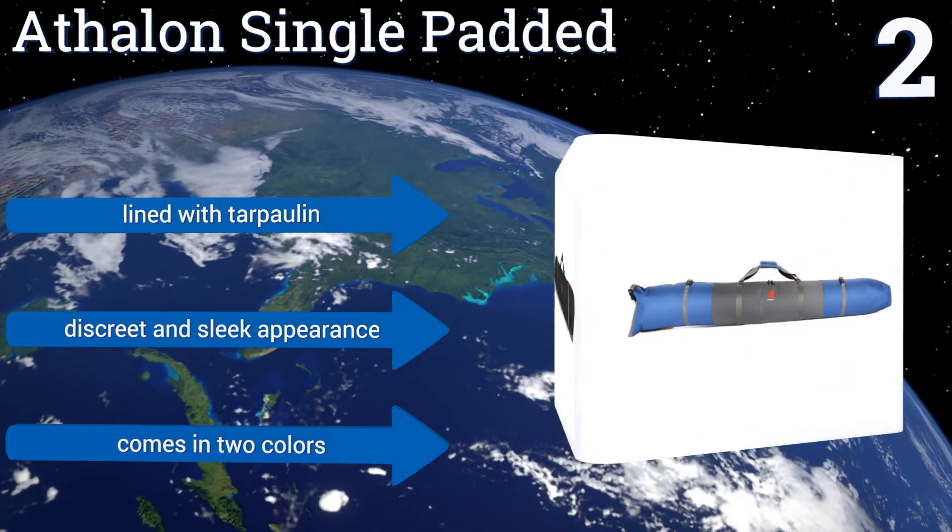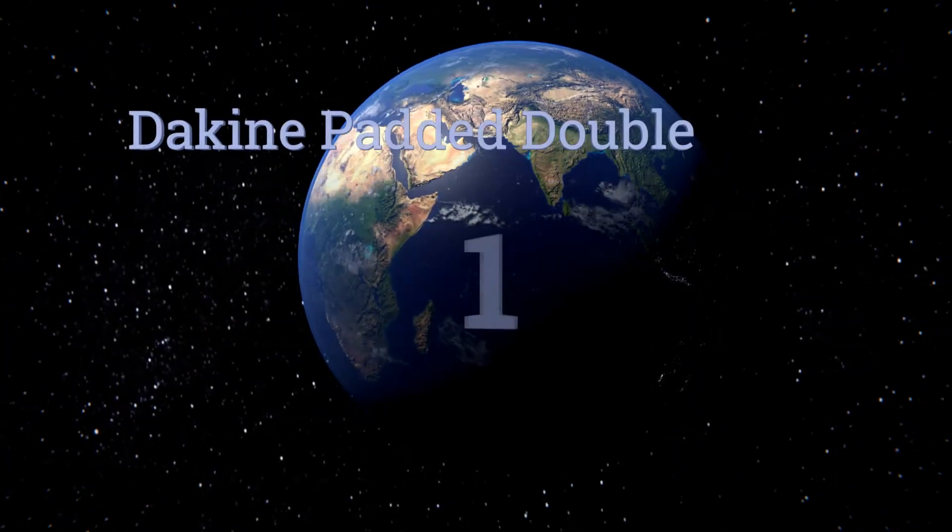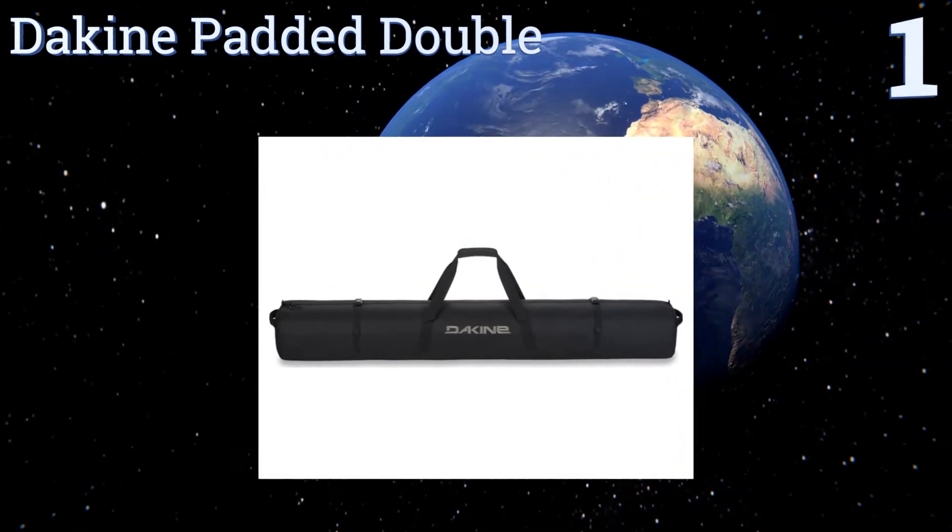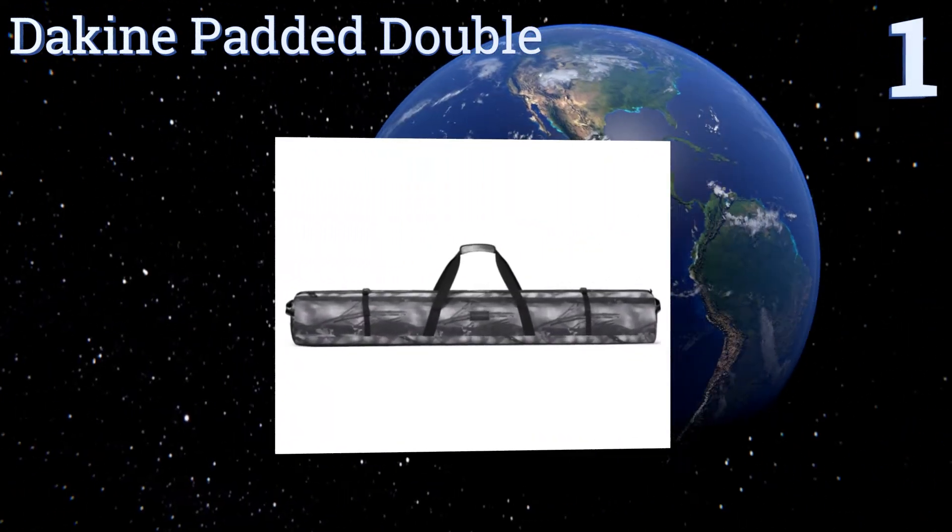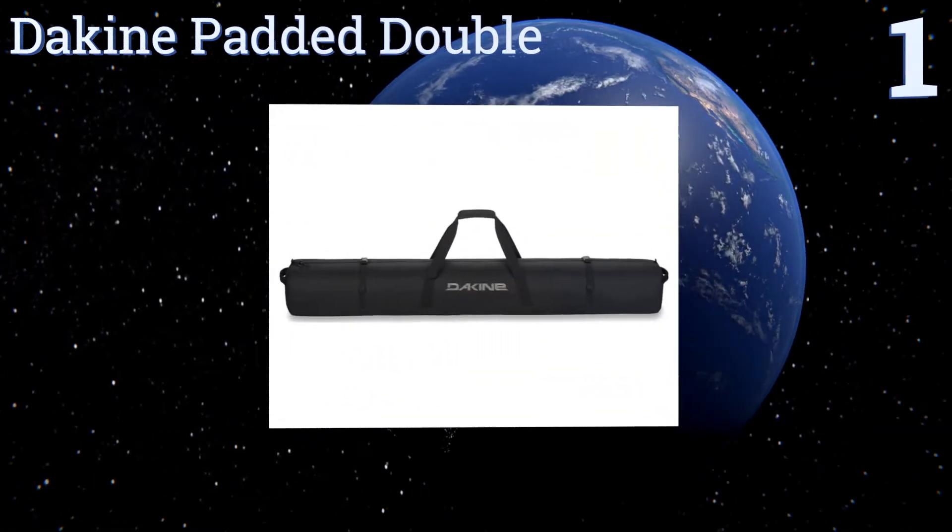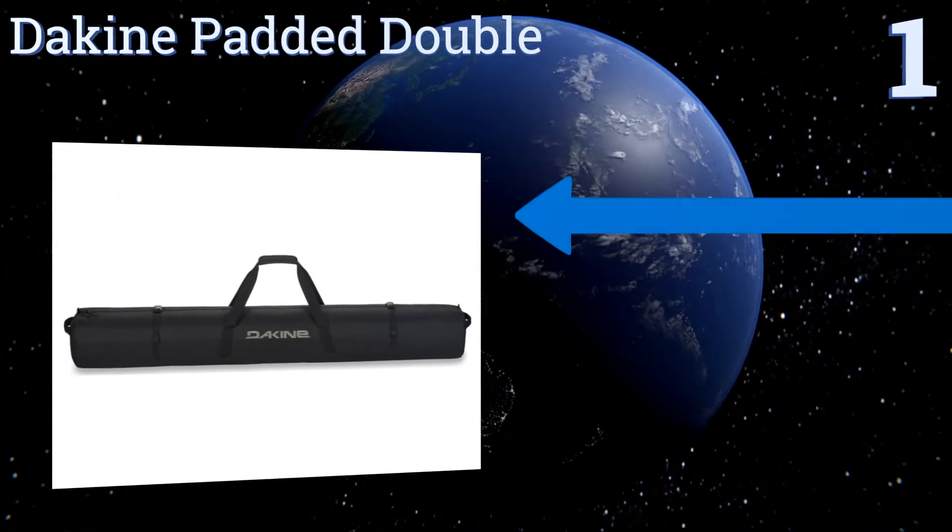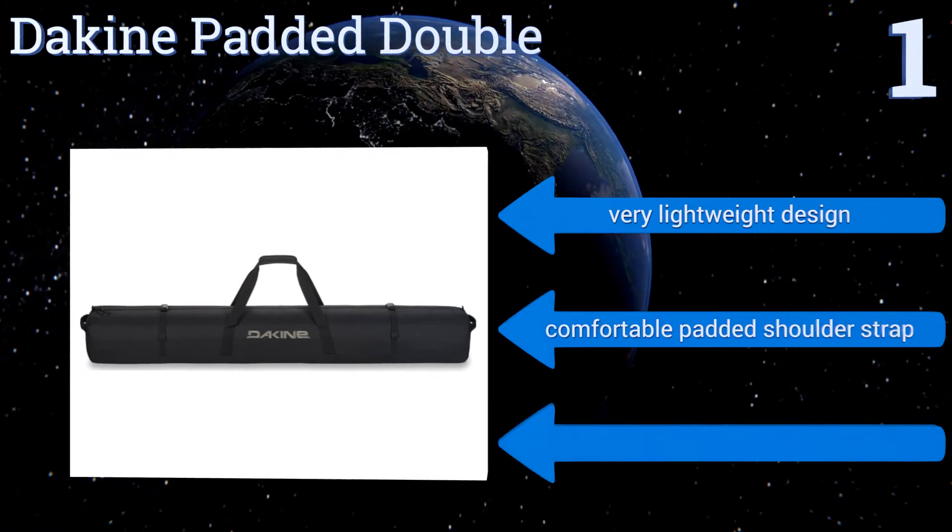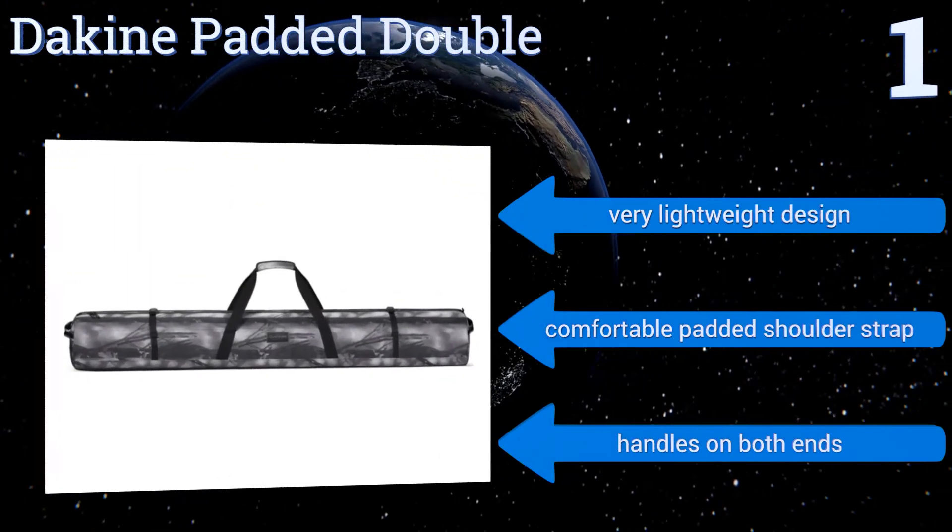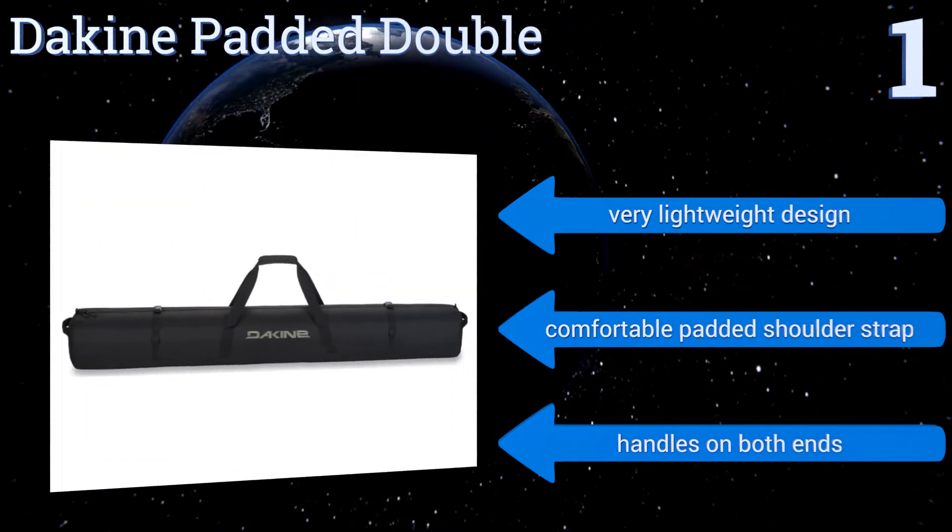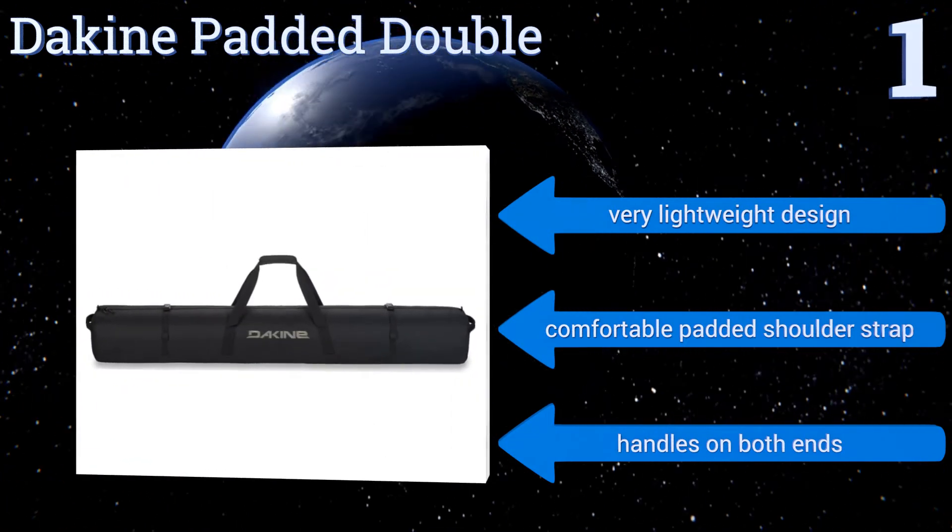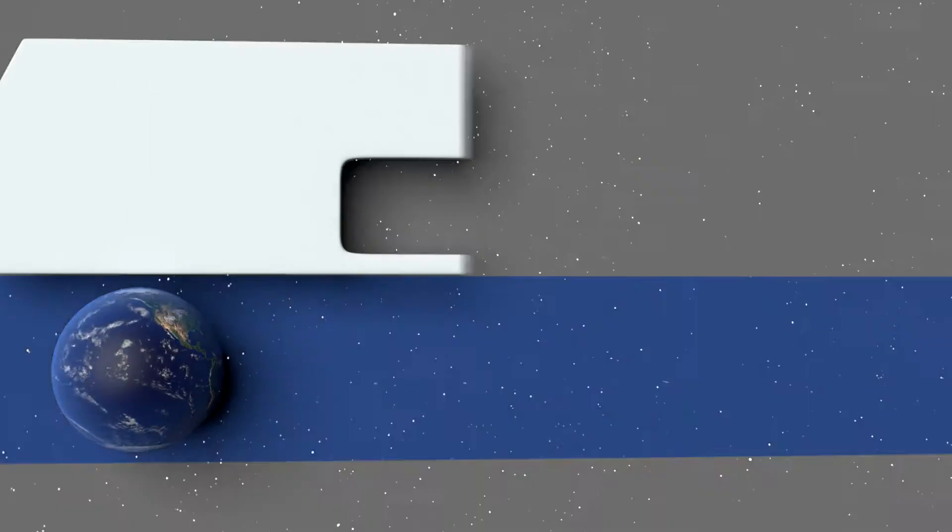And coming in at number one on our list, from one of the leading makers of snow sports products, the Dakine Padded Double combines quality, durability and style, resulting in an all-around great case. A full-length zipper works well with long skis and the compression straps help it stay compact during travel. It's a very lightweight design with a comfortable padded shoulder strap and handles on both ends.